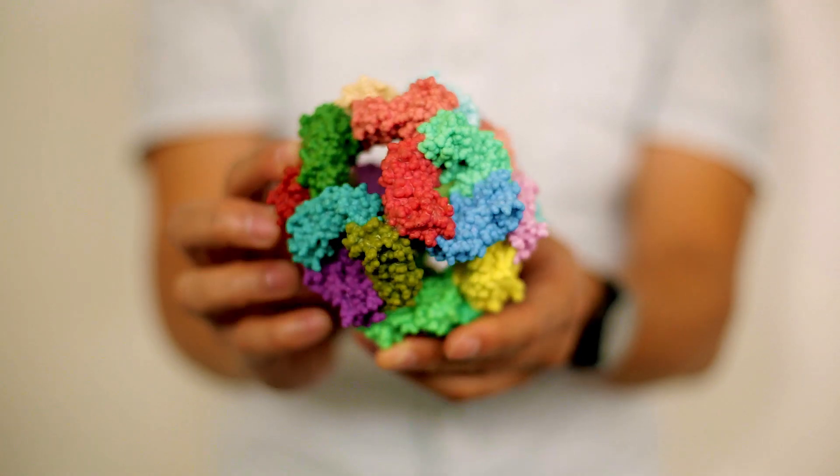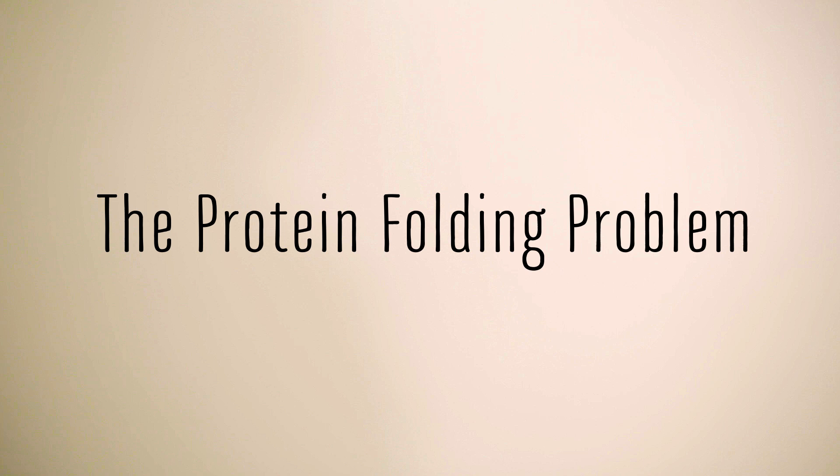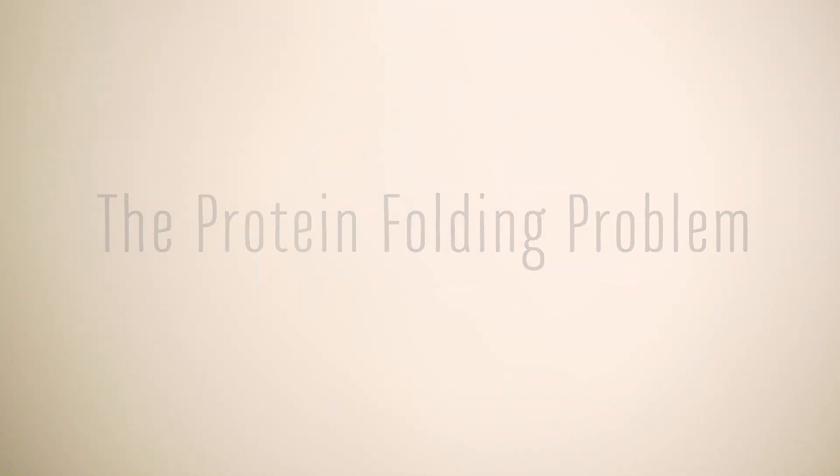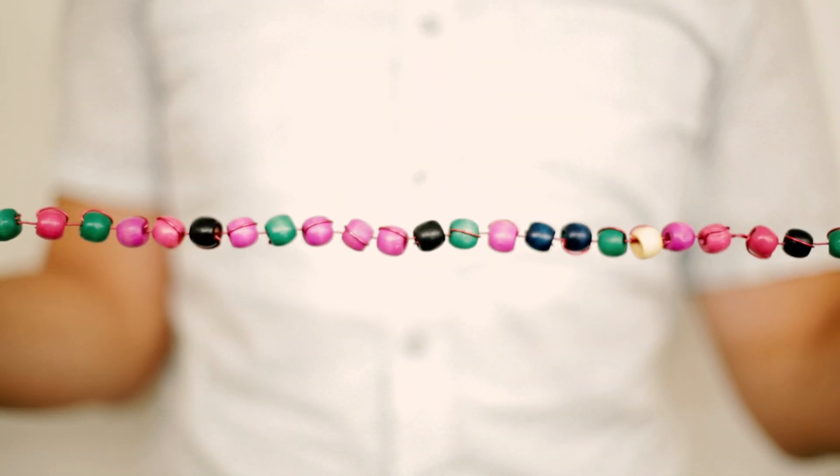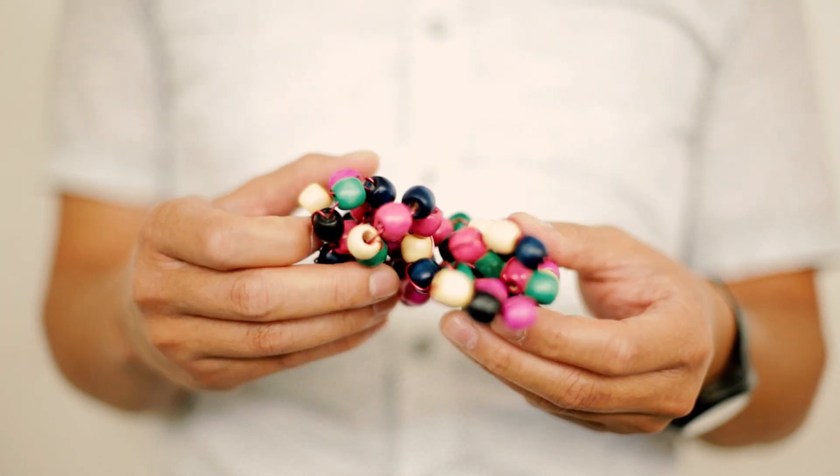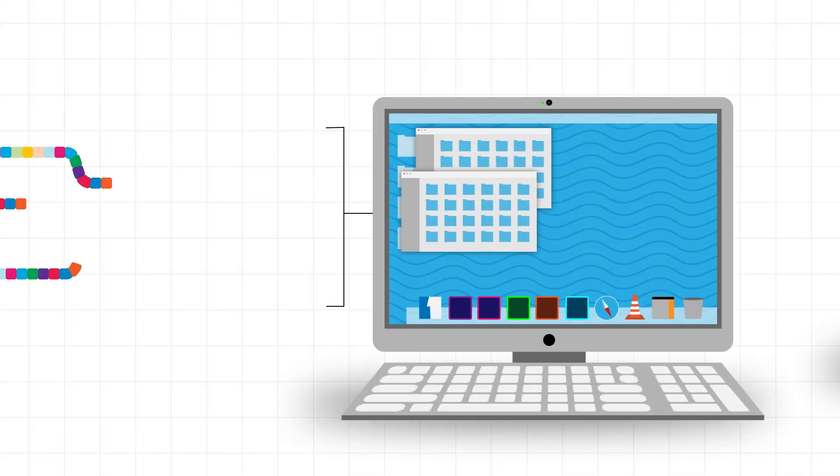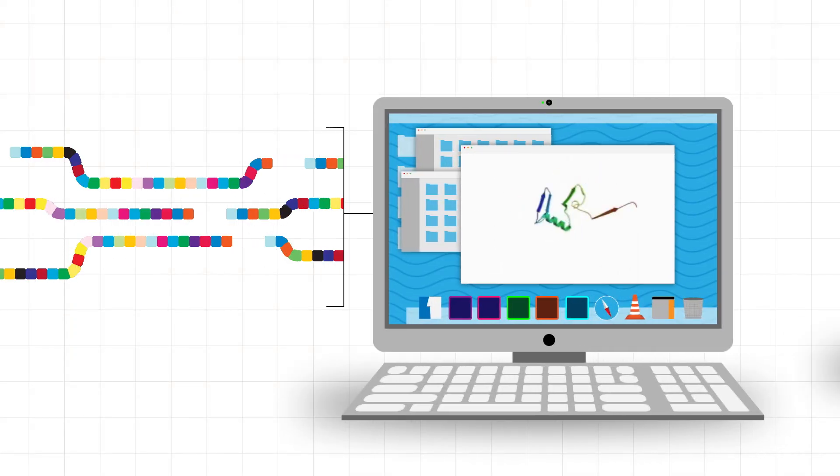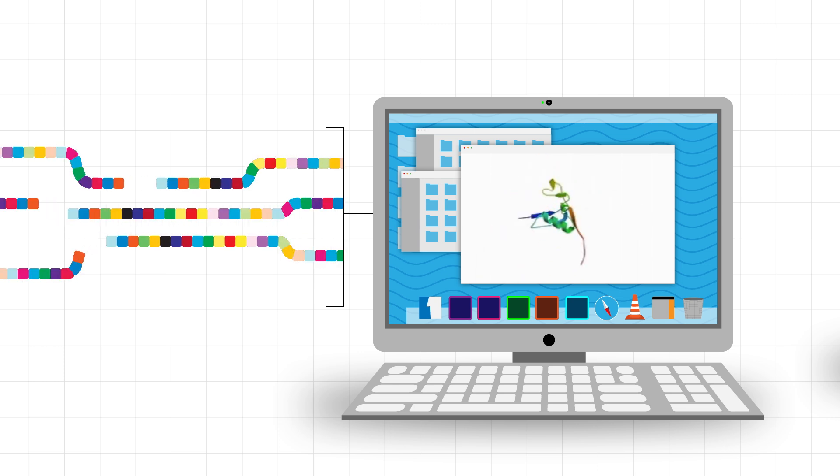So researchers have been trying for many years to solve the protein folding problem. Can we just look at the sequence of amino acids and predict how a protein is going to fold? You could take the amino acid sequence, plug it into a computer, and see if your algorithms are good enough to make sense of how it might fold.